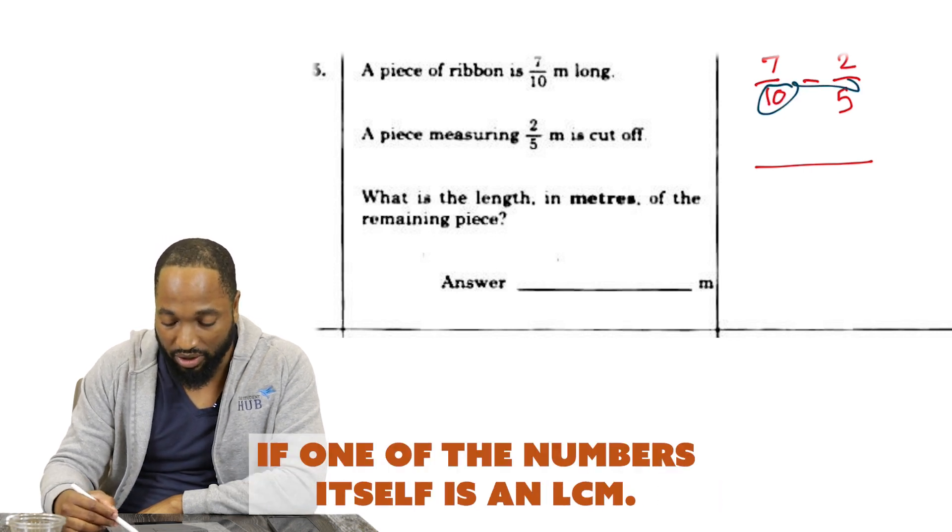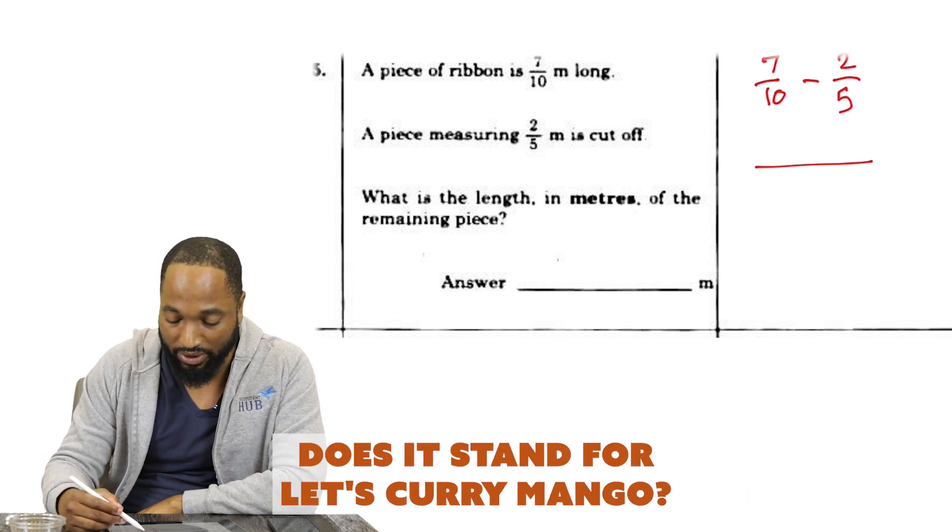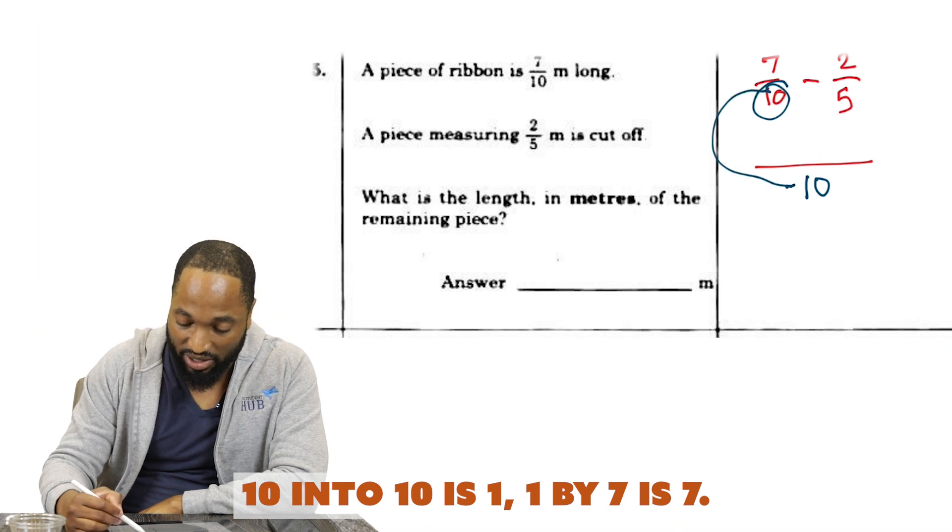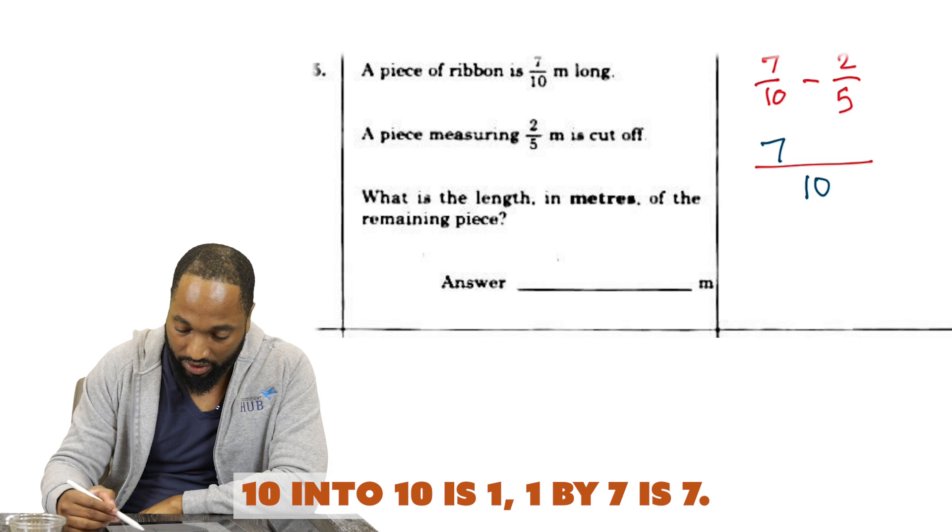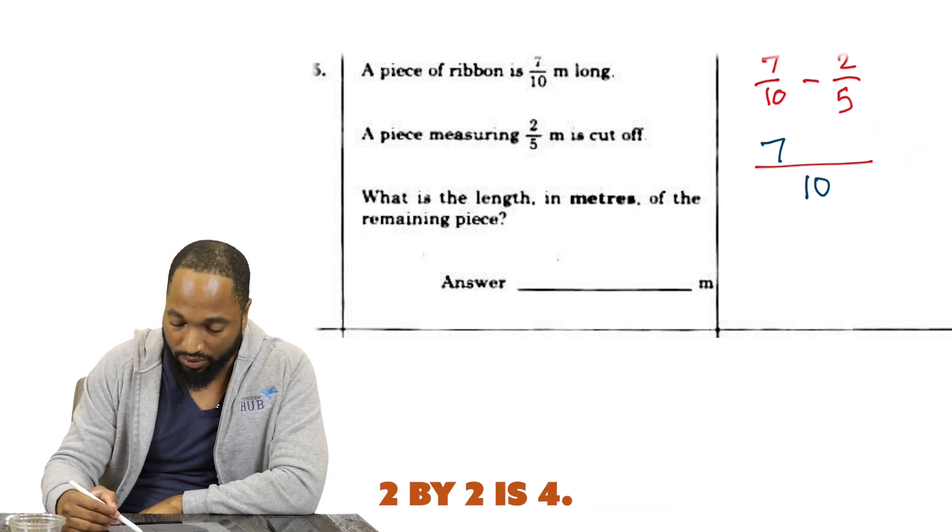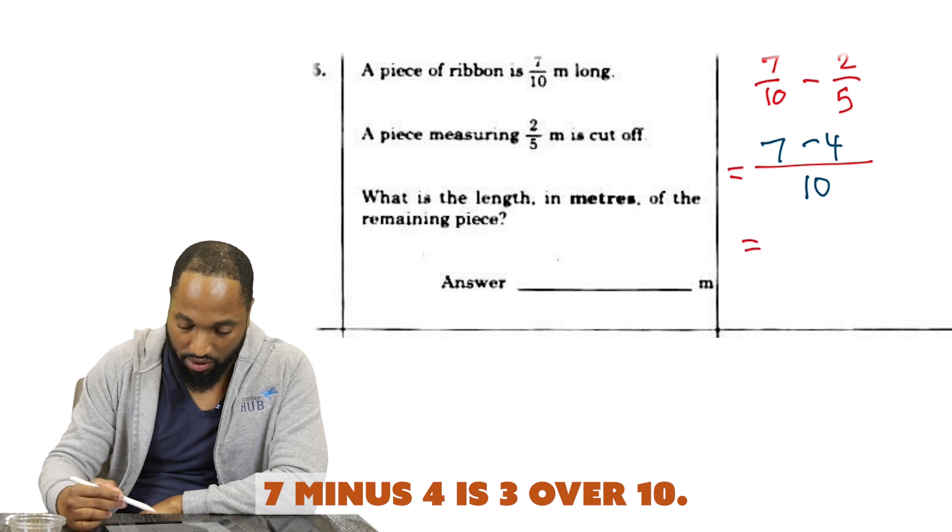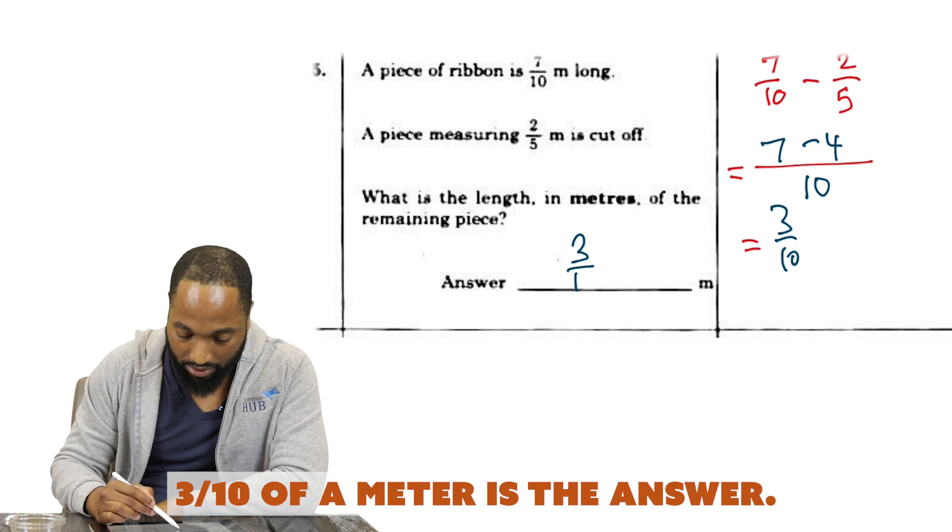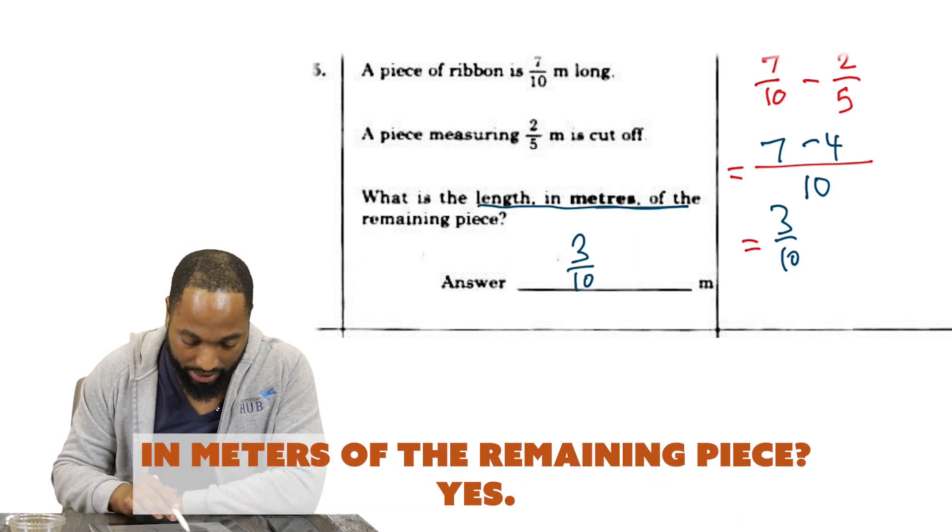What is the LCM of 10 and 5? It's not 15, it's not 20. 10 is good, 10 could work. We usually check to see if one of the numbers itself is an LCM. 10 into 10 is 1, 1 by 7 is 7. 5 could go into 10 twice, 2 by 2 is 4. So 7 minus 4 is 3 over 10. 3/10 of a meter is the answer.